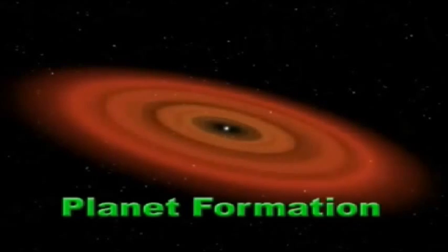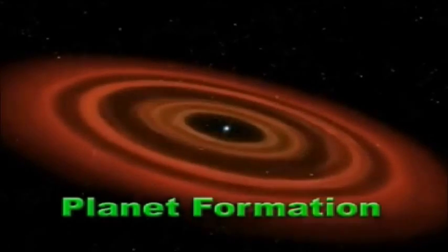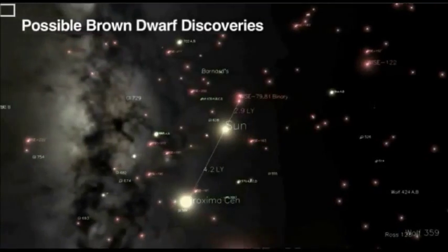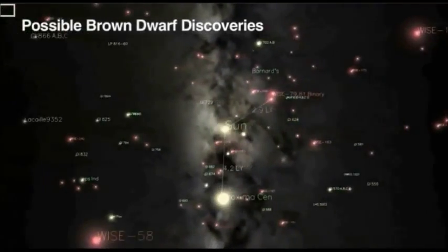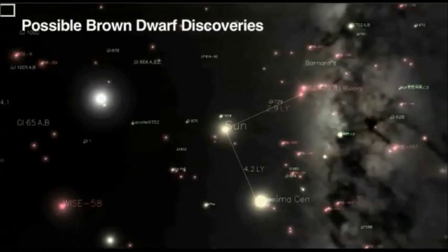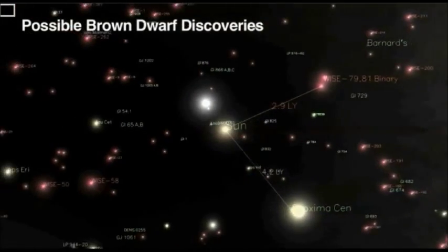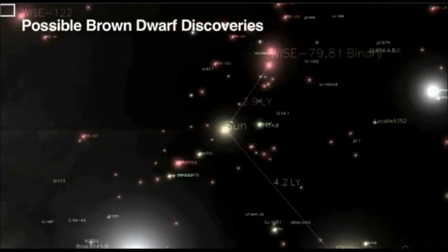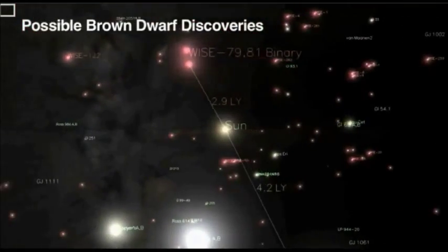However, planets are formed in a disk around a star, quite unlike the burgeoning process for brown dwarfs. So brown dwarfs are like stars but not really. They're also like planets. Failed stars are not luminous because they didn't gather enough star material during their collapse phase and thus could not trigger nuclear fusion at the end of the collapse.